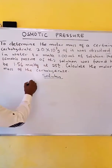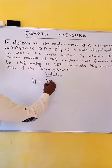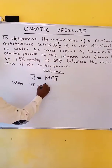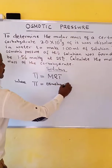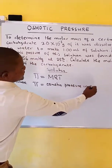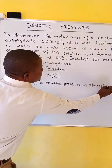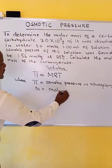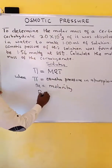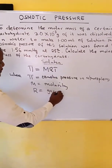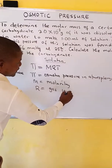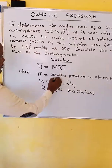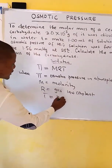We know that osmotic pressure is equal to MRT, where pi is osmotic pressure in atmospheres, M is molarity, R is the gas law constant, and T is temperature in Kelvin.